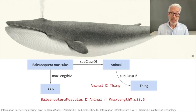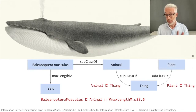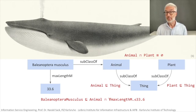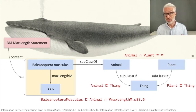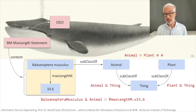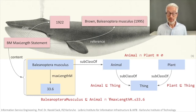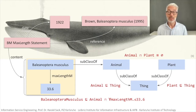Moreover, we could say an animal is a kind of thing, and plants are also things. Usually animals and plants are two different things — they don't necessarily have an intersection. The statement that there was no blue whale larger than 33.6 meters is a statement that comes from a measurement. It was in 1922 that this large blue whale was measured, and that measurement was referenced in a book by Brown about Balaenoptera musculus in 1995. So we have gained a lot of knowledge about the data.